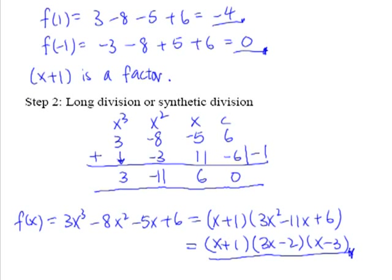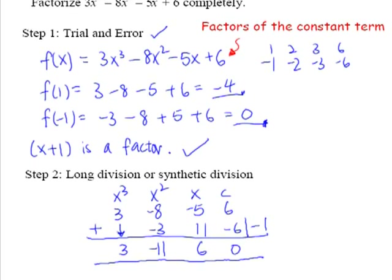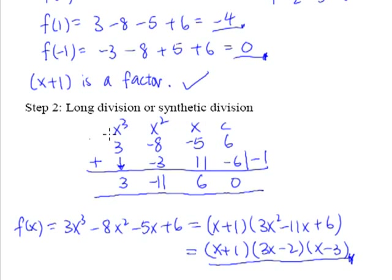Let's just recap one more time. It's a simple two-step problem to factorize any cubic expression. The first step is trial and error — guess the first linear factor by using the factors of the constant term. Once we find one factor, the next step is to use long division or synthetic division to find the remaining factors. Synthetic division is a lot easier, so it's something I hope you'll take time to learn. Finally, factorize the resulting quadratic completely. That's it!